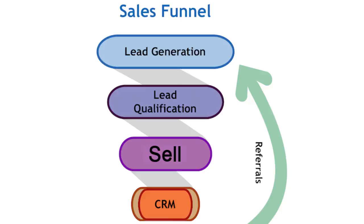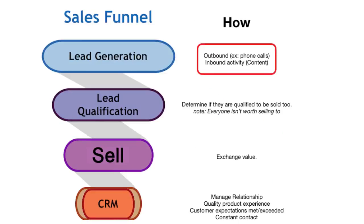Lead generation means you are finding people who could possibly be customers — you're identifying potential customers. Lead qualification means, out of the people you got in contact with and made aware of you, you're trying to qualify which ones are actually the type of people you want to sell to or could sell to. When we talk about lead generation, there are two types: outbound and inbound activity.